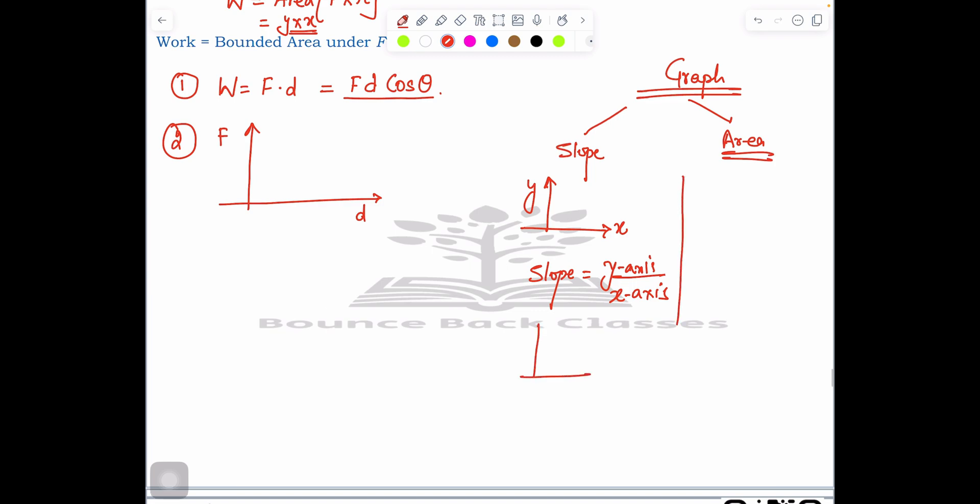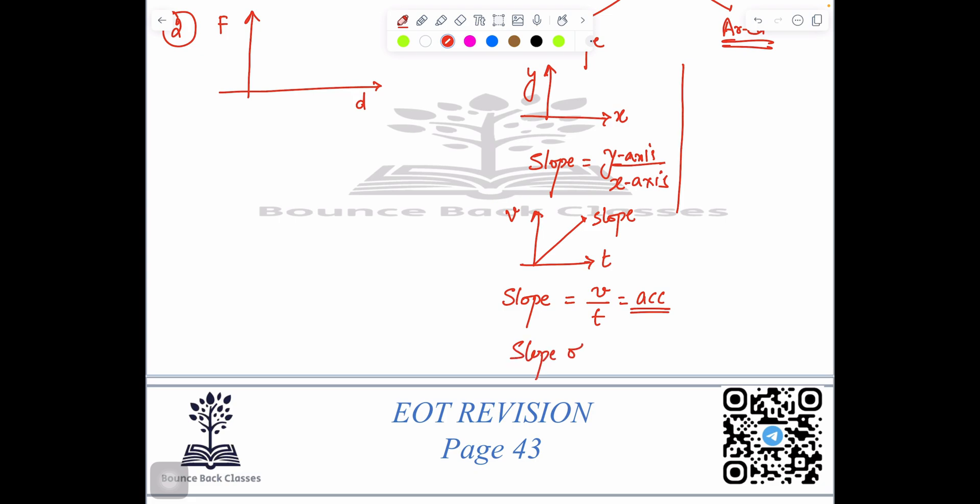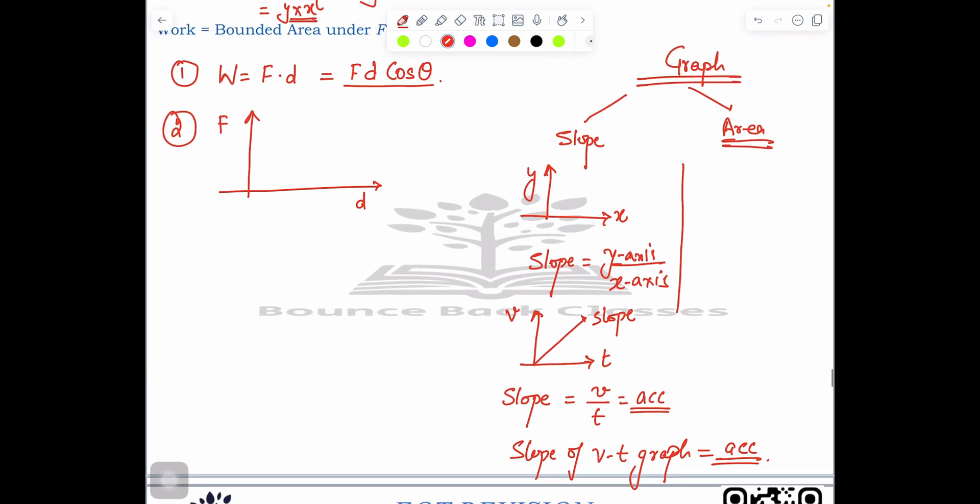Let's say you are solving a v-t graph. This is velocity, this is time, and this is your slope. So the slope of the v-t graph can be velocity divided by time. If you know velocity divided by time, what is the value? Acceleration. So the slope of the v-t graph equals acceleration.